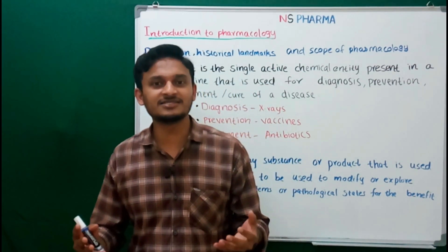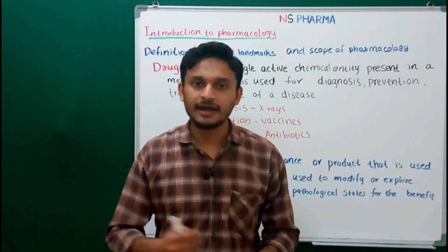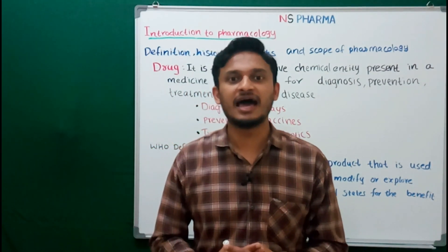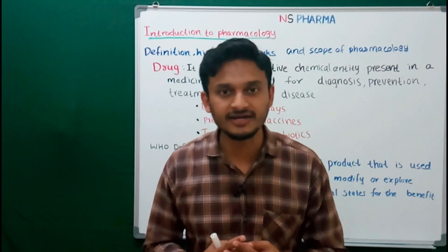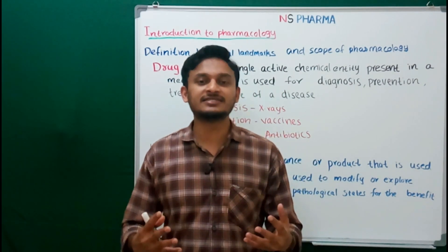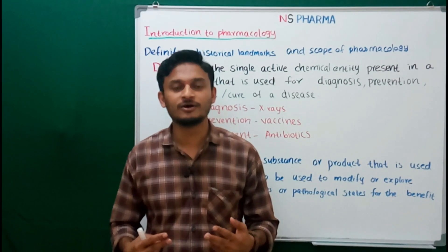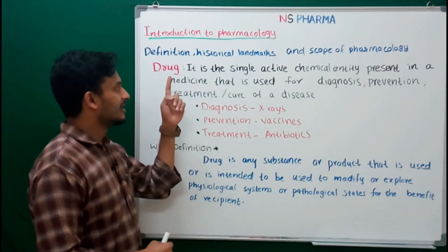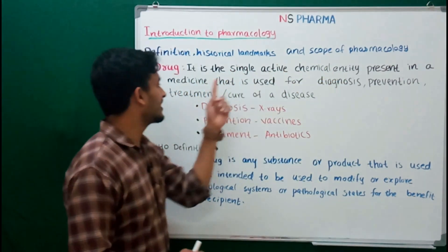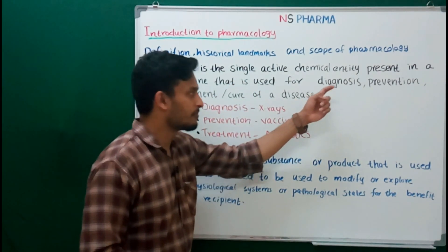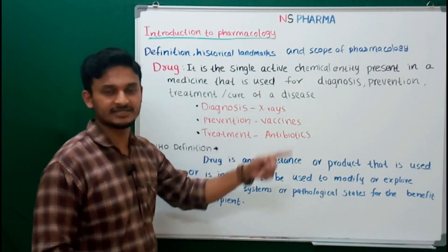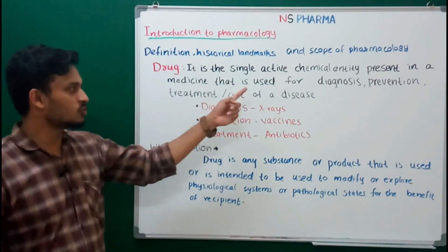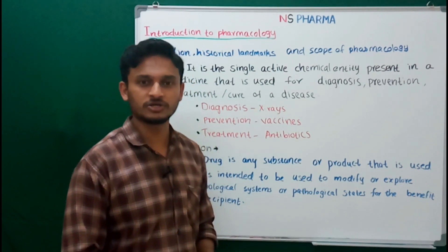Drug is also used for diagnosis. Sometimes in radiography, the abdominal region does not get clear vision in X-rays. At that time, the doctor will suggest taking bismuth sulfide, which provides a clear vision of the abdomen through X-rays — the drug is used for diagnosis. So, drug is a single active chemical entity present in a medicine which is used for the diagnosis, prevention, treatment, or cure of a disease.